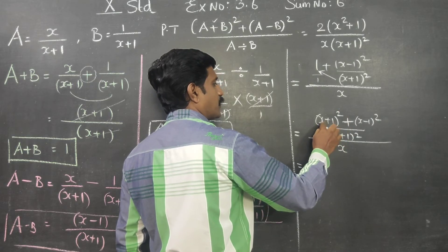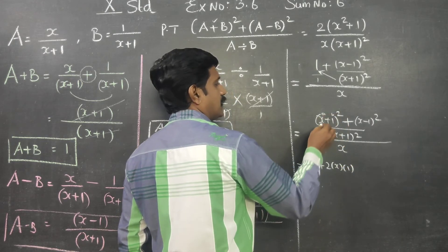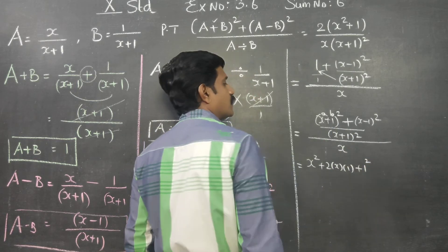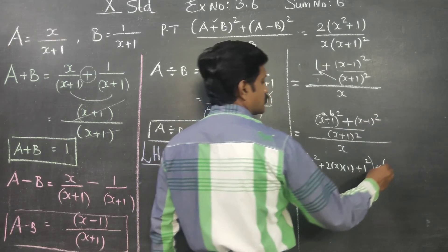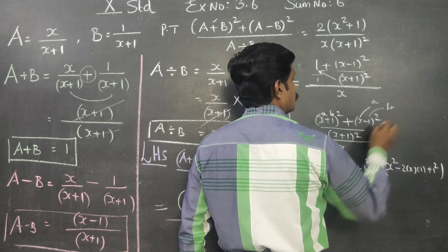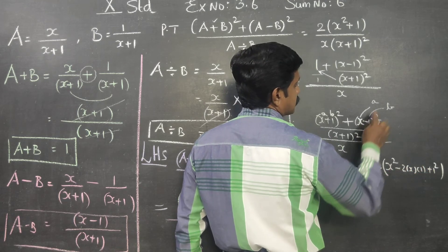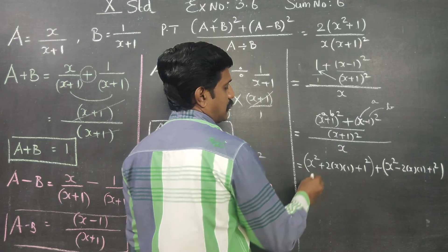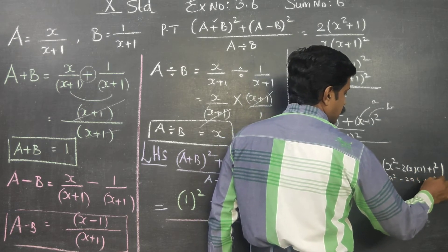What is the a plus b whole square formula? a squared plus 2ab plus b squared. So x is a and 1 is b, giving x squared plus 2 times x times 1 plus 1 squared. What is a minus b whole square formula? a squared minus 2ab plus b squared.